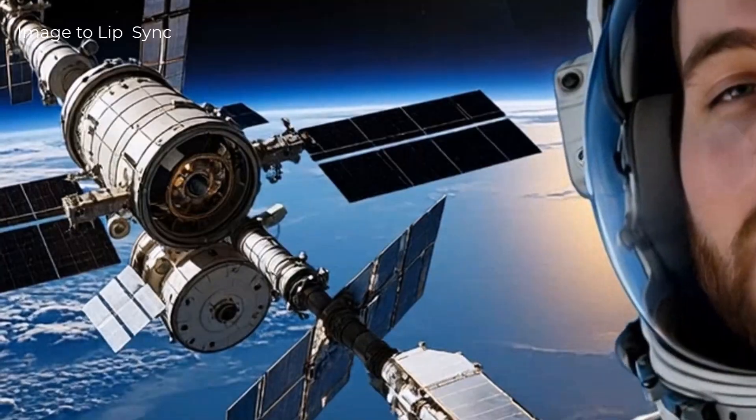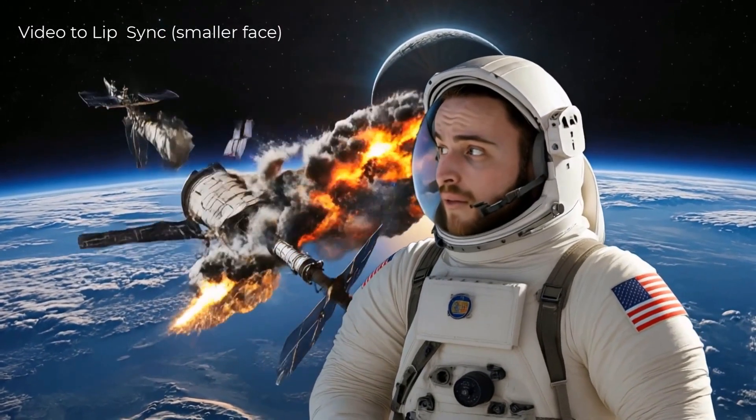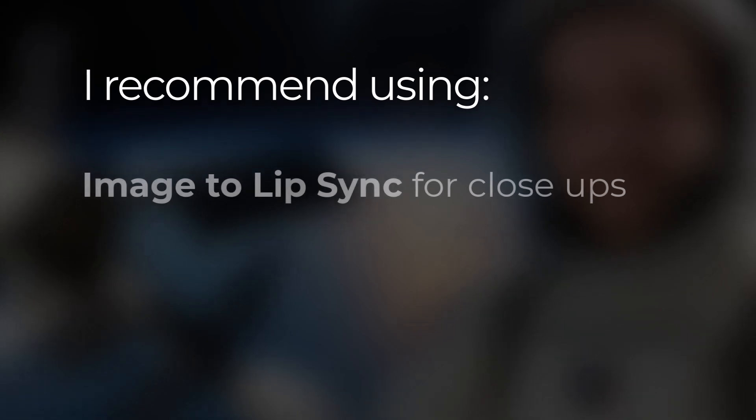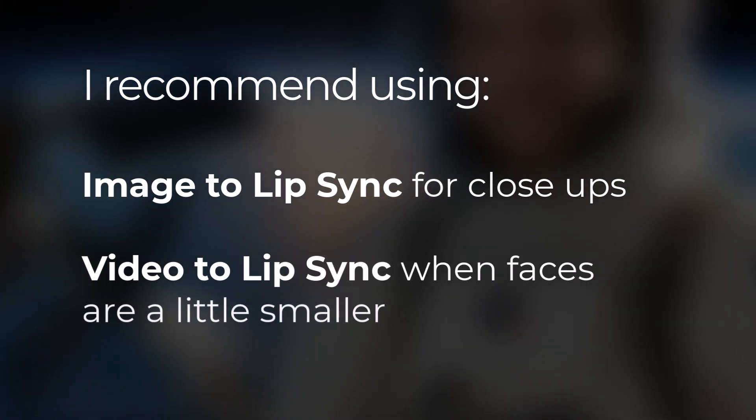The video result is decent, but there's an issue where the resolution around the mouth is quite low. When using image-to-lip-sync instead the result is much sharper, though you lose the animated background. I re-edited and regenerated with my face a bit smaller in frame and that fixed the resolution issue. So my recommendation is: use image-to-lip-sync for close-ups — if it's a close-up, you probably don't want people focusing on the background anyway — and for video lip sync, make faces a little smaller so more of the scene is visible, then edit clips together.